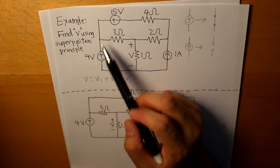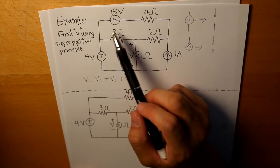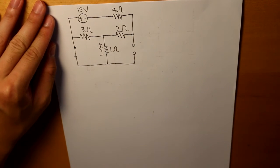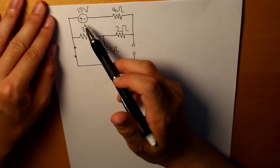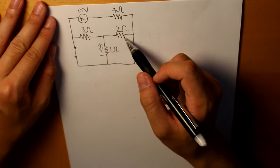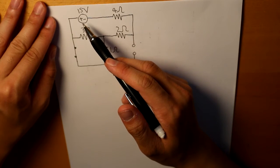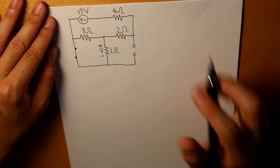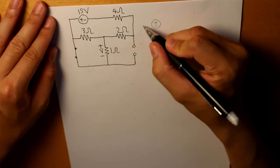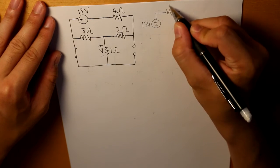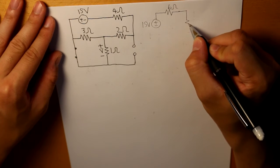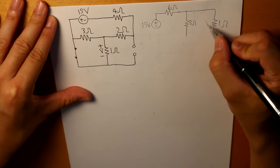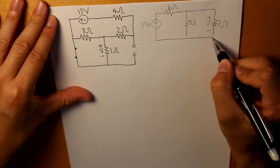Moving on, we turn off the 4-volt source, keep the current source off as well, and turn on the 15-volt source. We combine the 4-ohm and 2-ohm resistors to get 6 ohms. Then we rotate the circuit counterclockwise 90 degrees to simplify. The resulting circuit has the 15-volt source, 6 ohms, 3 ohms, and the 1-ohm resistor with the voltage across it, and then ground.